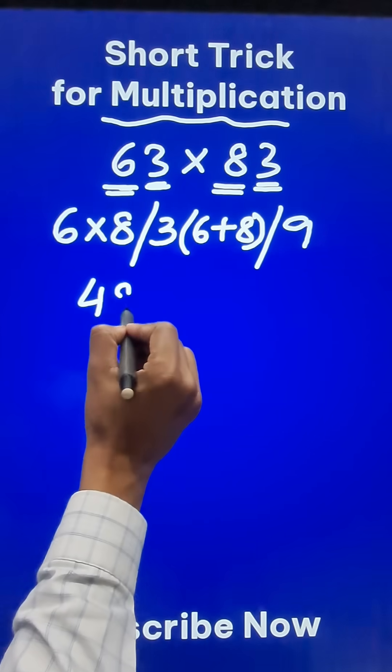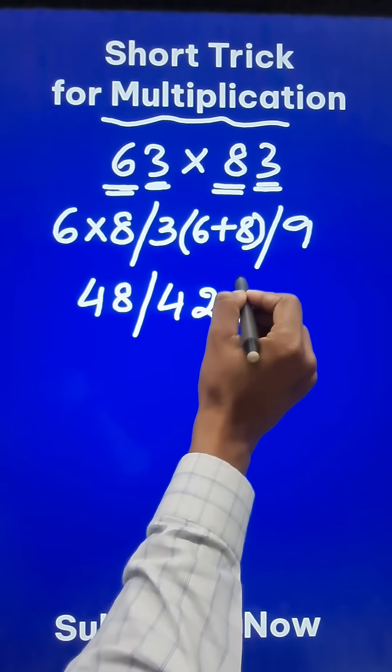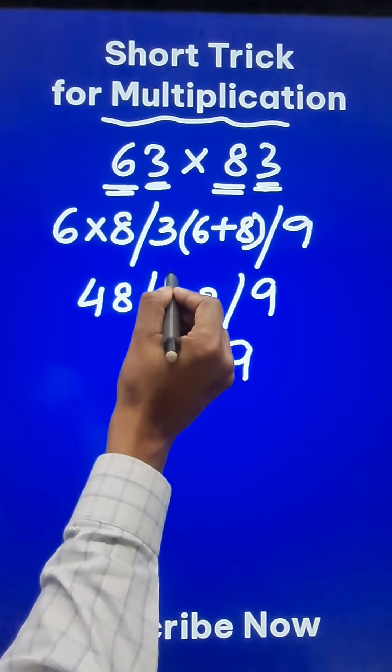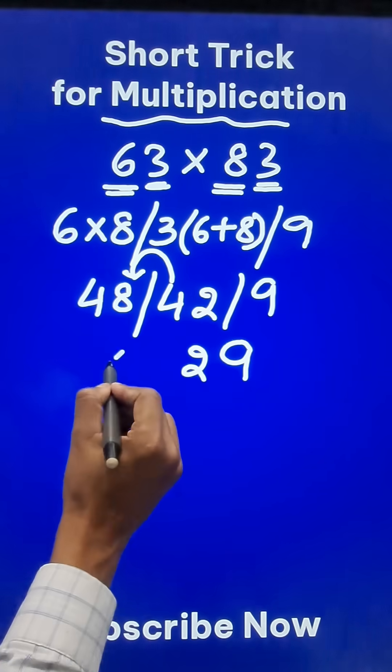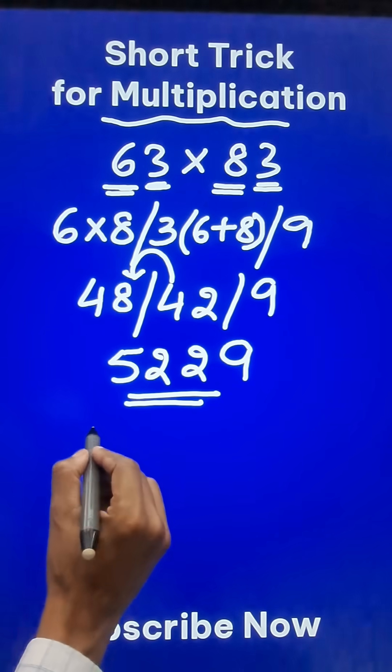Now 6 times 8 is 48, and then 8 plus 6 is 14, times 3 is 42, and finally we have 9. So retain the unit digit 9. 42 means 2 and the 4 gets added to 48 giving you 52. So 5229 is the product of 63 and 83.